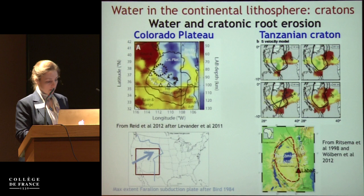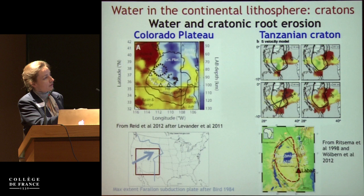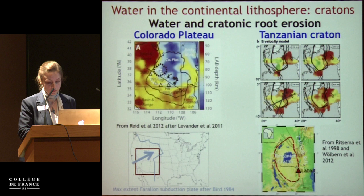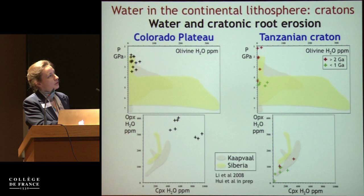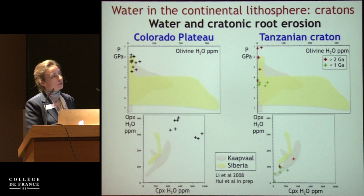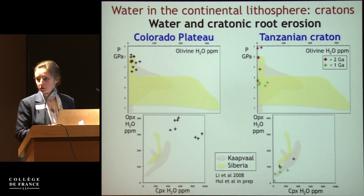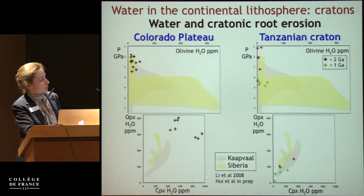The other location is the Tanzanian craton, which still has a deep root of about 200 kilometers. However, it sits right next to the East African Rift and on its edge is starting to thin slightly. The xenoliths we studied come from Labait, right at the edge. There are two types: shallow xenoliths that are more than 2 billion years old — true cratonic material — and the deepest ones are young, meaning the deep cratonic root there has already been replaced by new mantle.